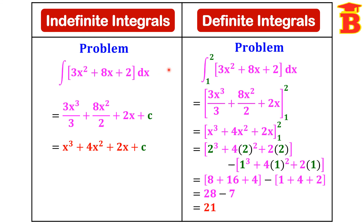So now see the difference between the two. Exactly there are three differences. In indefinite integrals we don't have limits, but in definite integrals we have limits. In indefinite integrals we add plus C, but in definite integrals we apply the limits — that is upper limit minus lower limit. In indefinite integrals finally we get a general solution, but in definite integrals finally we get a value. Therefore it is a value solution. Thanks for watching.